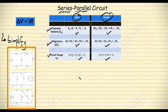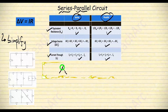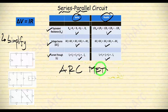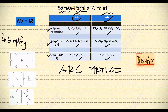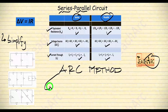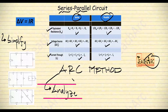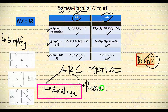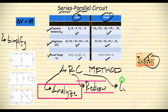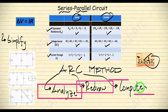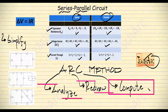Another way to simplify complex circuits is by using the ARC method. The name is made up because I had no idea what else to call it. In all seriousness, I call it the ARC method because it requires you to Analyze the circuit, Redraw it, and finally Compute or calculate whatever quantity you are asked to solve. Maybe you have seen this method before — I just don't know — but for this video, I will call it the ARC method.